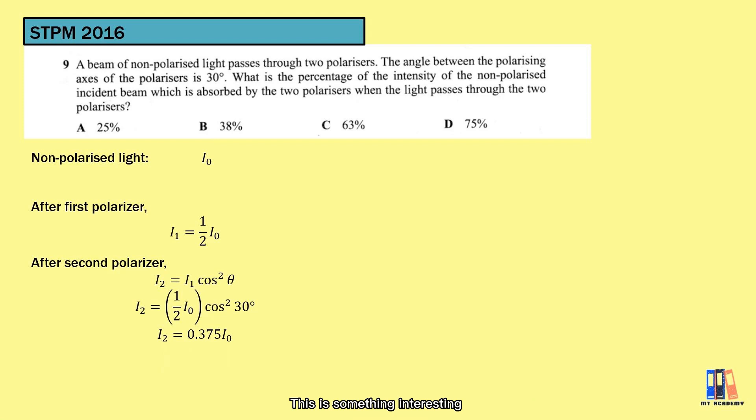This is something interesting. The question asks for the percentage of light absorbed by both polarizers. The first polarizer definitely absorbed 50% of the intensity, while the second polarizer in this case will absorb another 12.5% of the original intensity. So there will be a total of 62.5% absorbed by both polarizers. So the answer is C for this question.